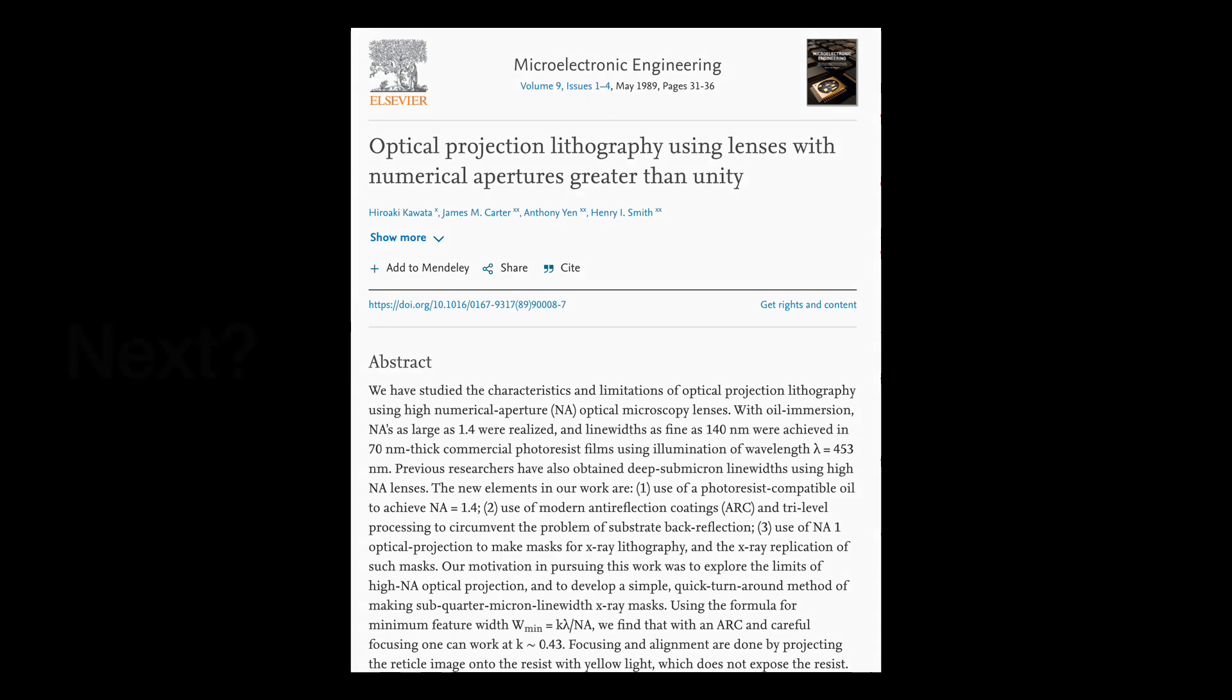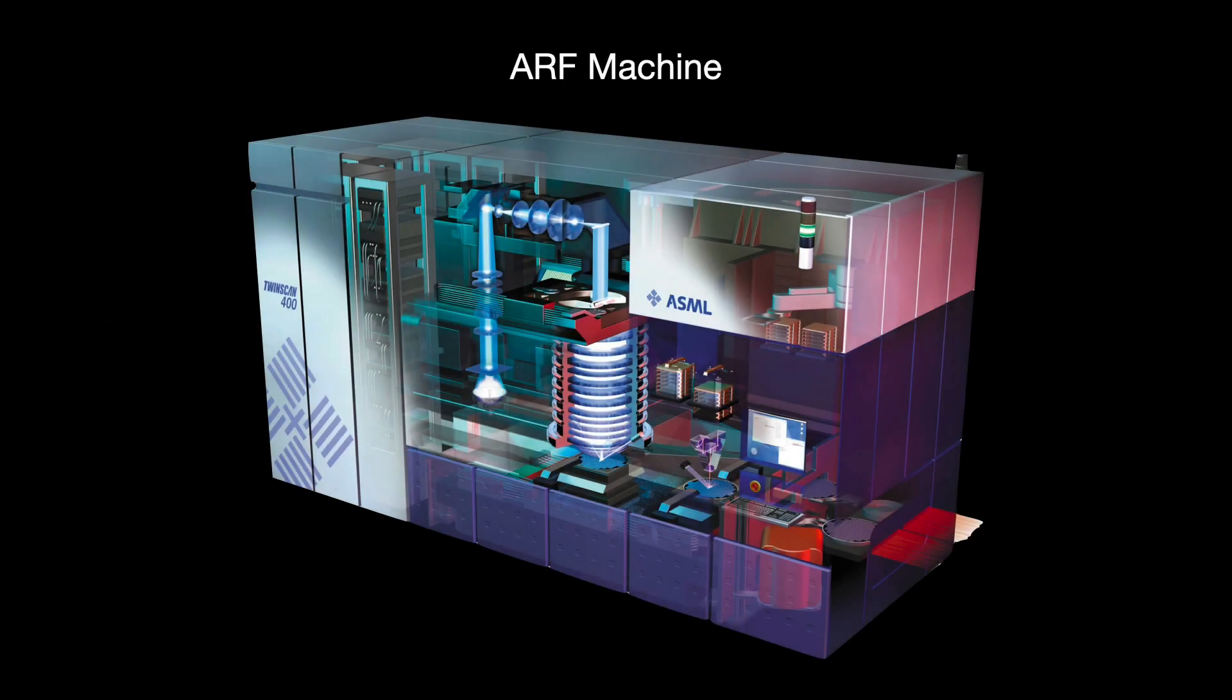Over the next decade, the semiconductor industry focused on the development of 193 nanometer lithography. This wavelength brought substantial challenges. For instance, most materials absorbed this type of UV light, requiring most new components to be re-engineered. 193 was eventually delivered, but what would come after it?